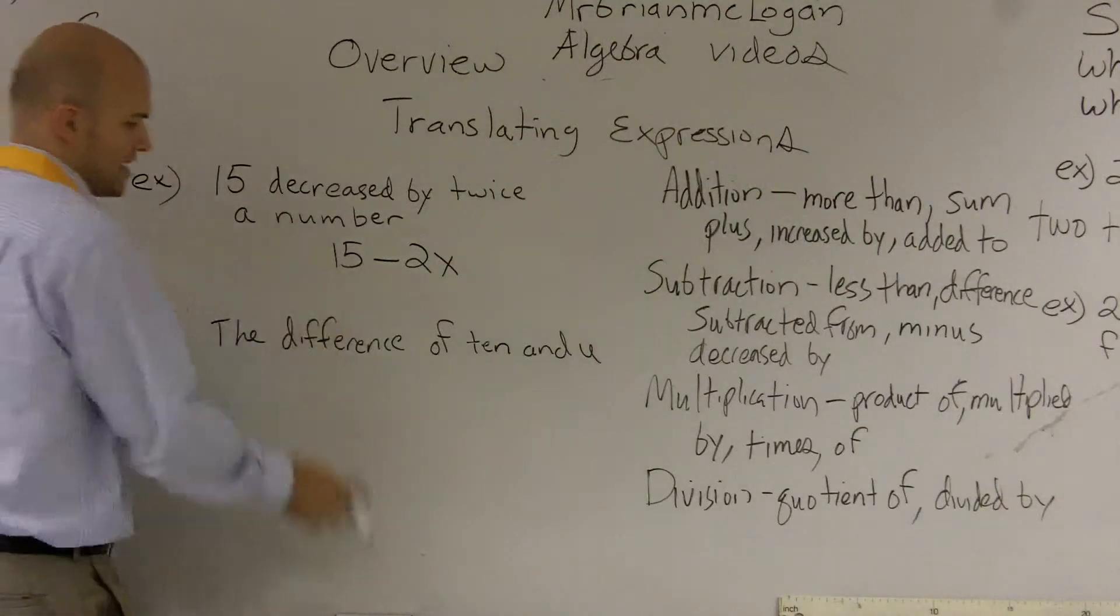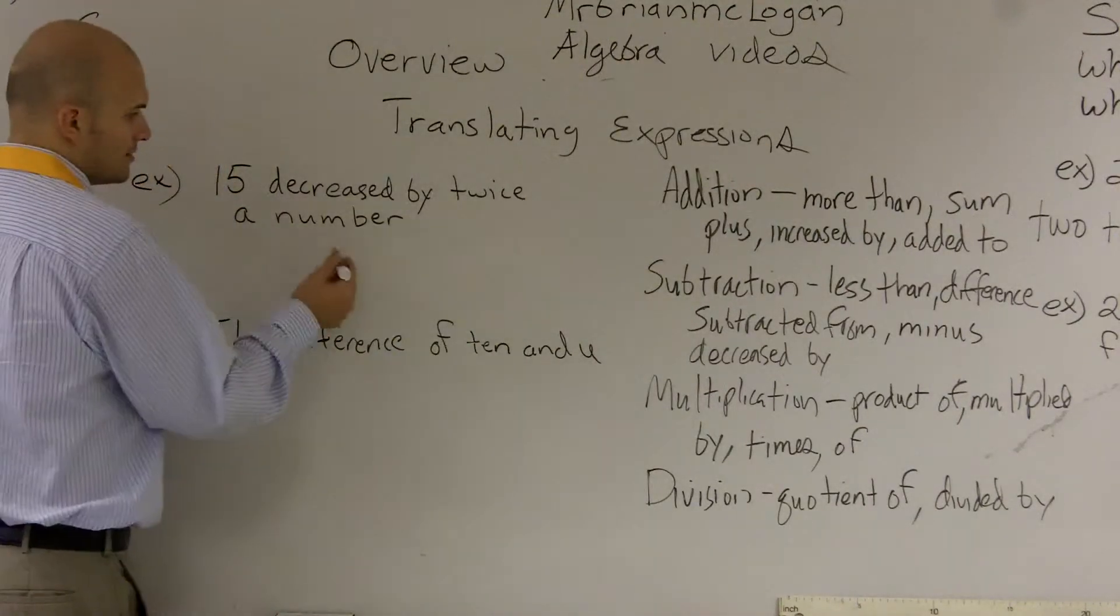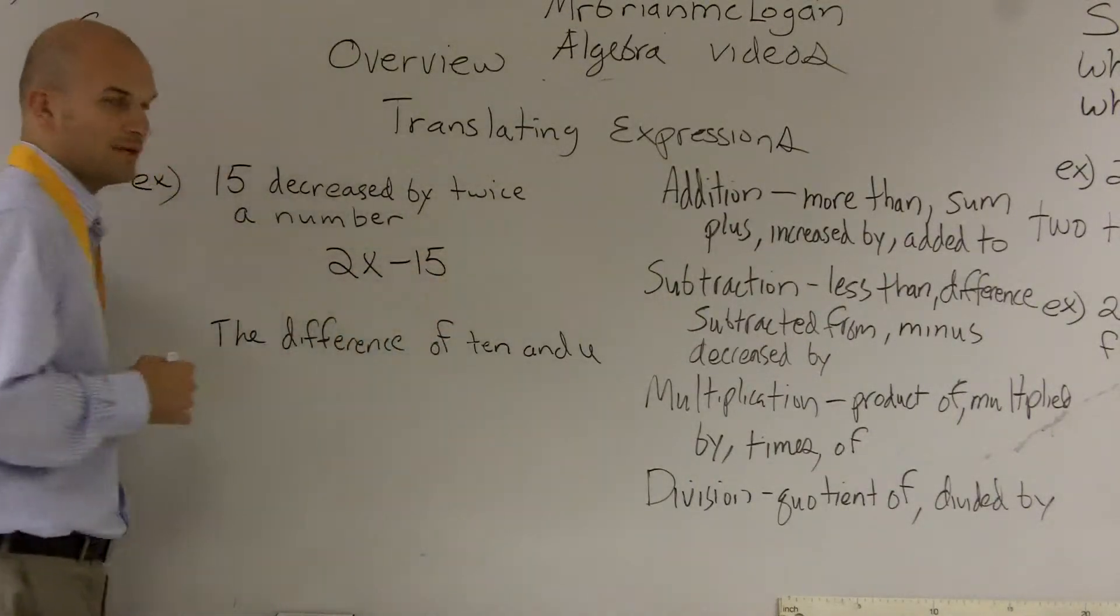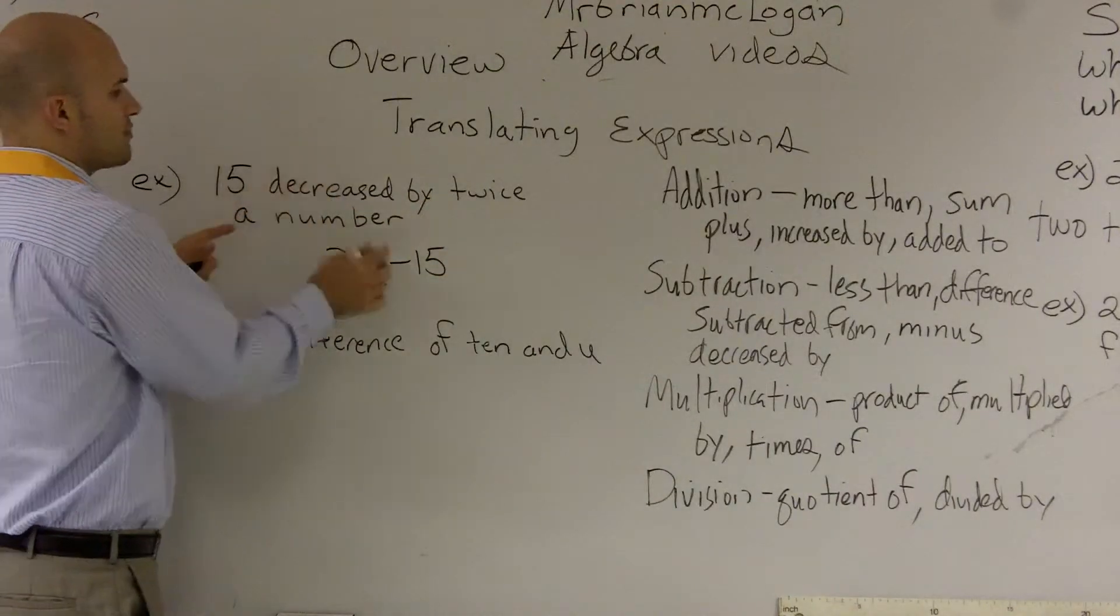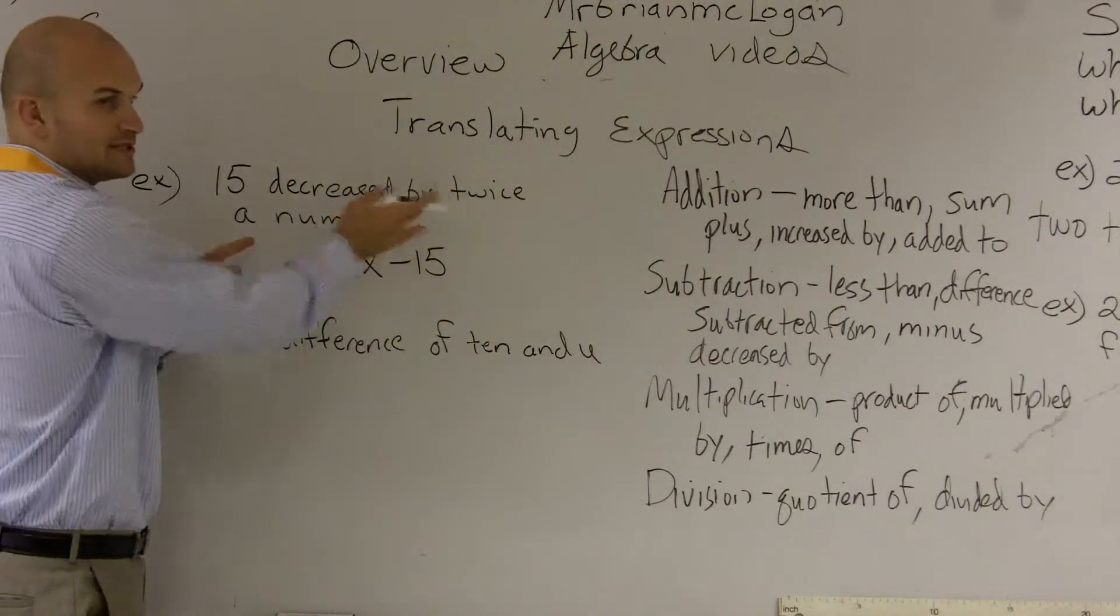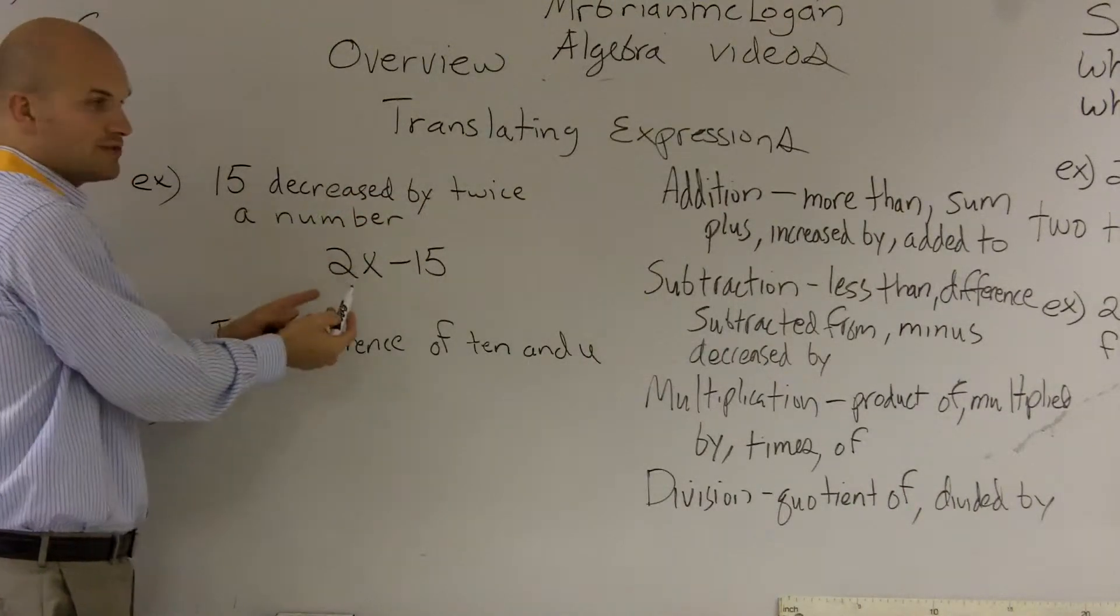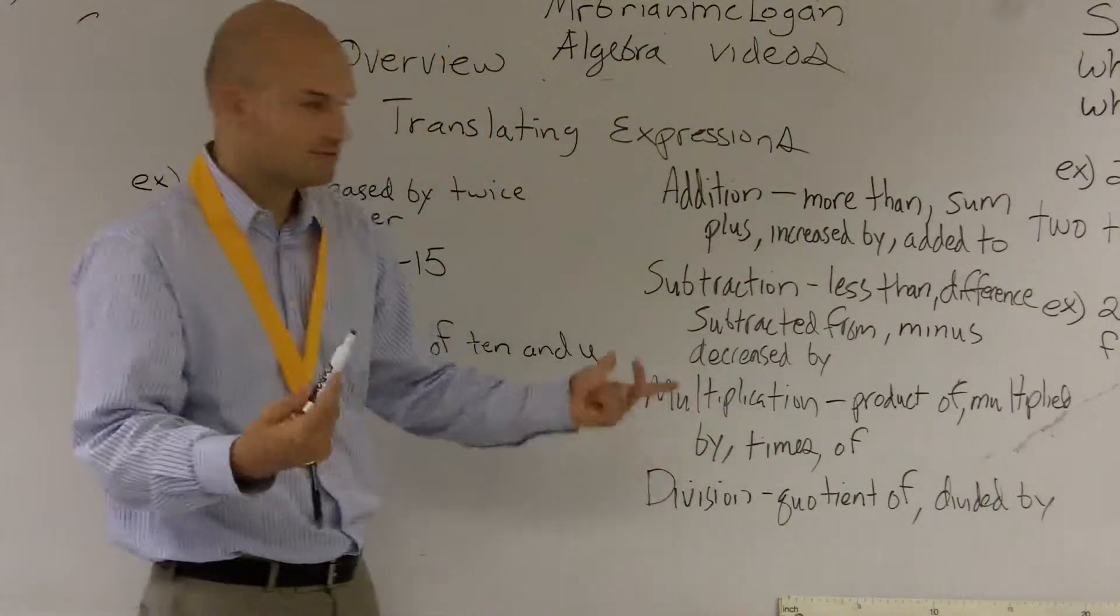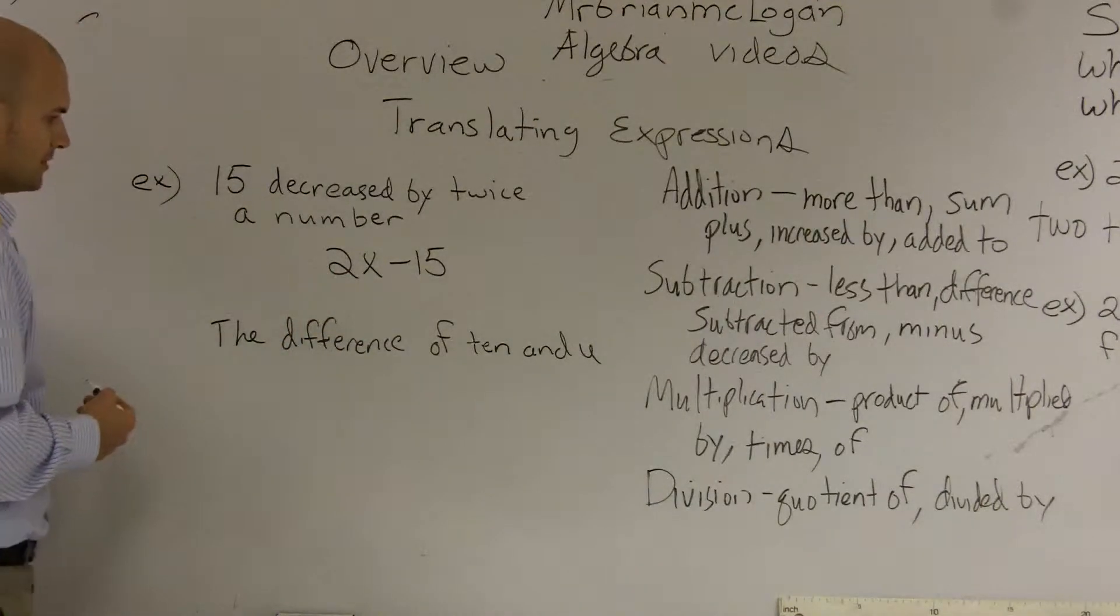So actually what we have to do is we actually have to subtract 15. So again, it's actually going to be 2x minus 15. So you've got to be careful. When it says 15 decreased by, that actually means you're going to be subtracting 15 from whatever it's being decreased by, which in this case was twice a number. Well, that's going to be 2, 2 times a number.